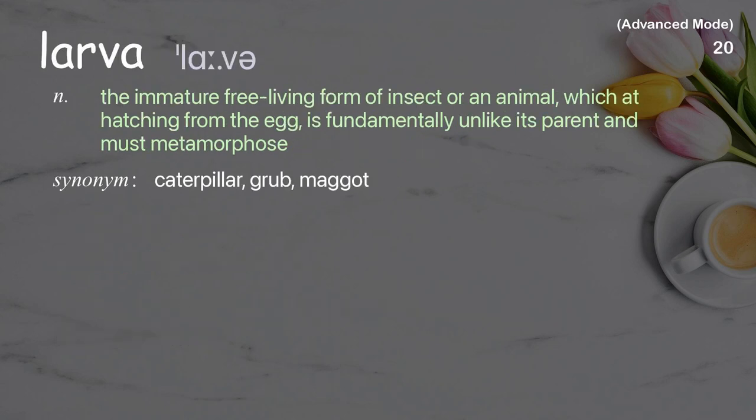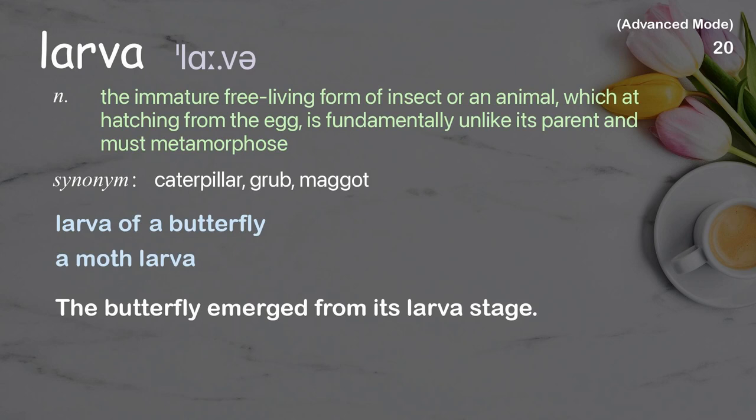Larva: The immature free-living form of an insect or animal, which having hatched from the egg, is fundamentally unlike its parent and must metamorphose. Examples: Larva of a butterfly. A moth larva. The butterfly emerged from its larva stage.